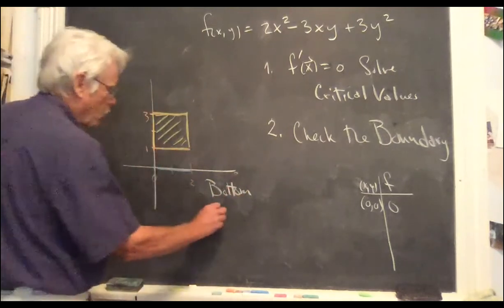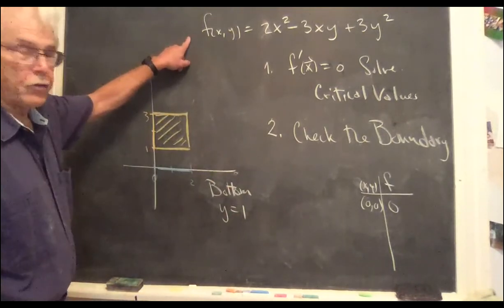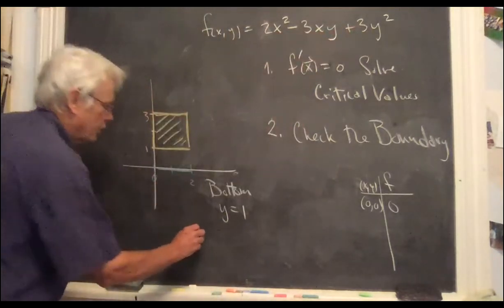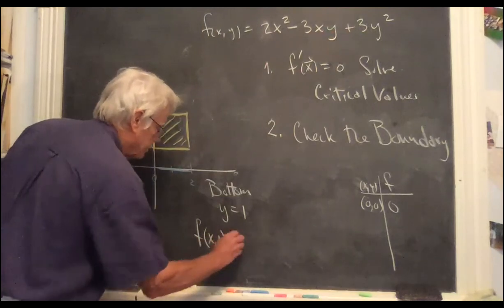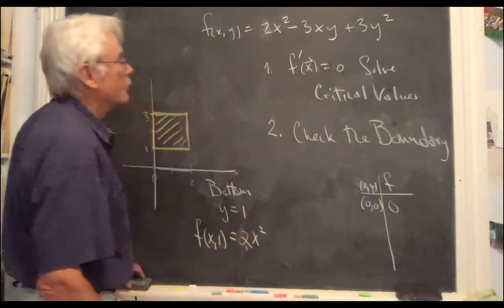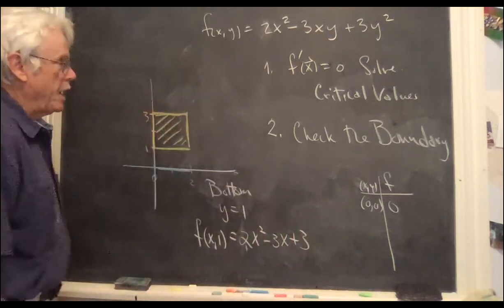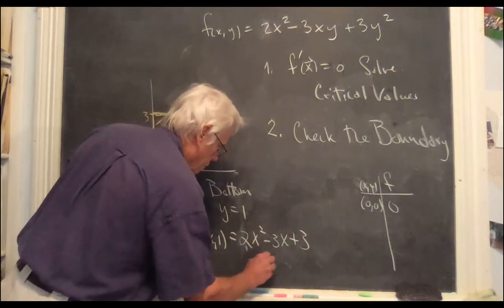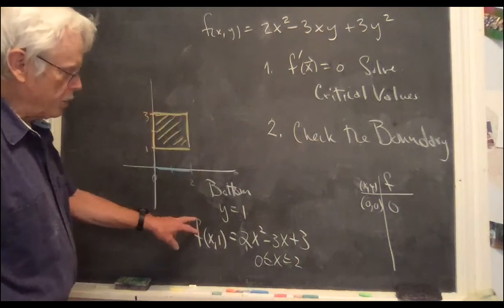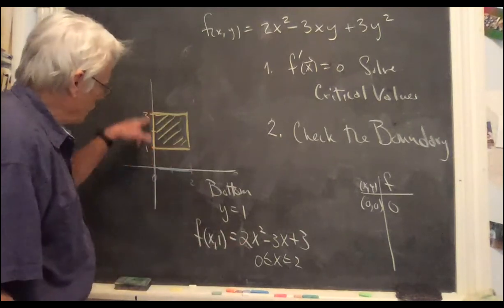The bottom is described by y equals 1. So the function on the bottom consists of subbing in y equals 1. f of x comma 1 is equal to 2x squared minus 3x plus 3. And x is between 0 and 2. So this becomes a one-dimensional problem. You have a single variable here.